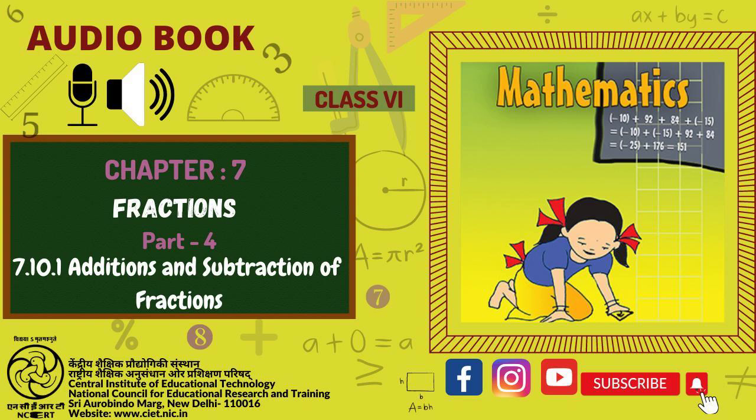7.10.2 Adding and subtracting fractions. We have learnt to add and subtract like fractions. It is also not very difficult to add fractions that do not have the same denominator. When we have to add or subtract fractions, we first find equivalent fractions with the same denominator and then proceed. What added to 1 fifth gives half? This means subtract 1 fifth from half to get the required number. Since 1 fifth and half are unlike fractions, in order to subtract them,